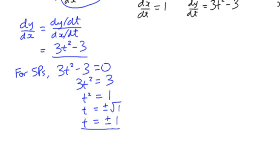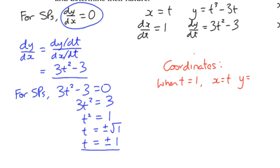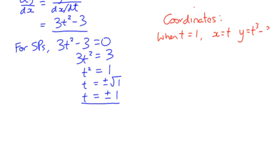Let's just take a step at this point to try and find what those points are. So when t equals 1, we're going to use our original x and y values. x equals t, and y equals t³ - 3t. So when t equals 1, x is 1, and y equals 1³ - 3, so y is -2. So we have a stationary point at (1, -2).